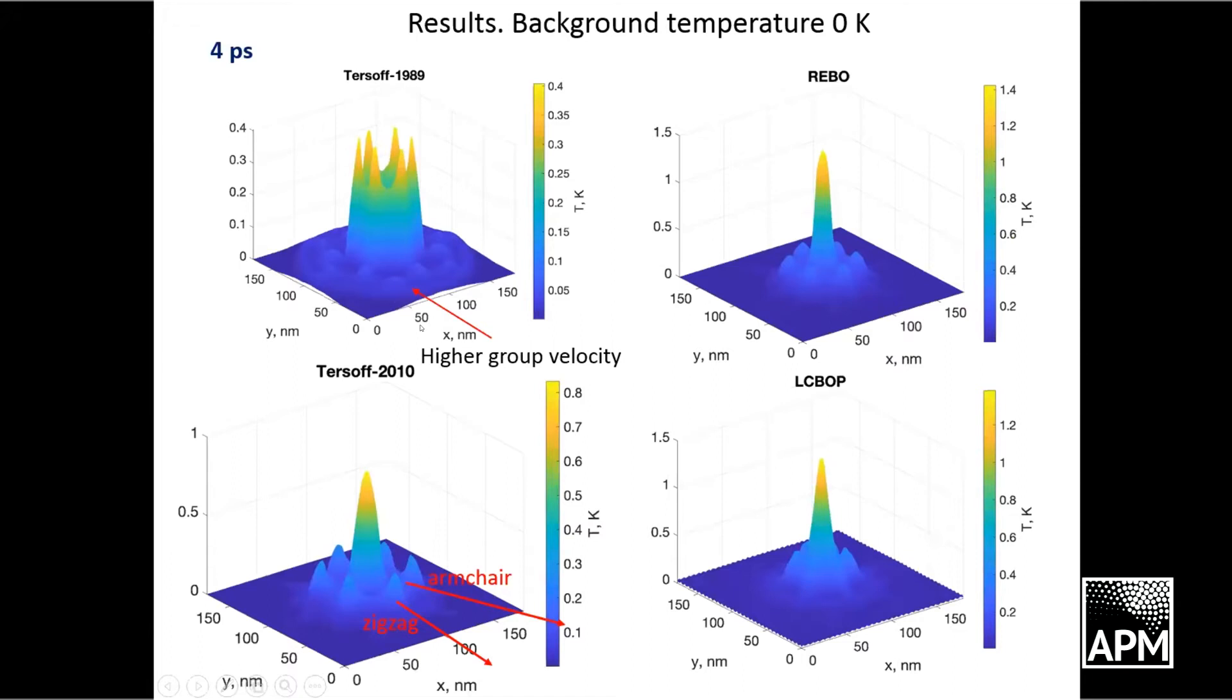Here are the results. It is surprising that the only potential that shows wave-like propagation is the old Tersoff potential. We see that there is a minimum inside and six peaks around, which mainly carry the heat outside of the center. All the other potentials show a completely different picture. Instead, there is a peak in the middle of our system and six peaks that move the heat outside, but the amplitude of these peaks is smaller than for this potential.